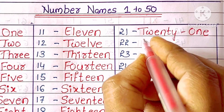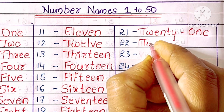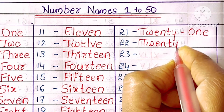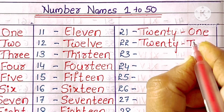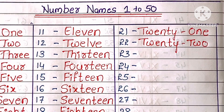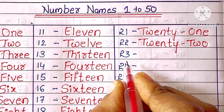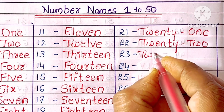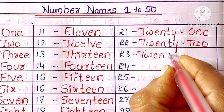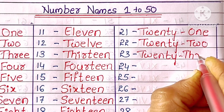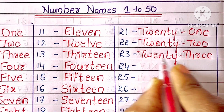22. T-W-E-N-T-Y-T-W-O. Twenty-two. 23. T-W-E-N-T-Y-T-H-R-double E. Twenty-three.